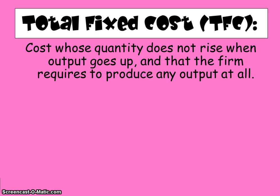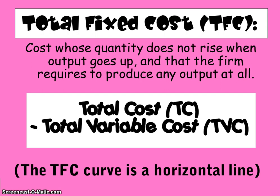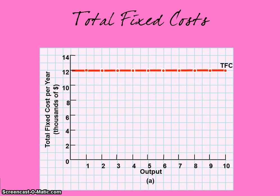Sometimes you will just be asked to analyze the total fixed costs — all the fixed costs of production. These are the costs whose quantity does not rise when output increases and that the firm requires to produce any output at all. This is going to be the cost at zero units of output. At any level of output, you figure out which costs are fixed by subtracting variable costs from total cost. The total fixed cost curve is a horizontal line. If Al's garage company has $12,000 a year in fixed costs, then whether he's manufacturing zero or ten garages, his fixed cost will still be $12,000.